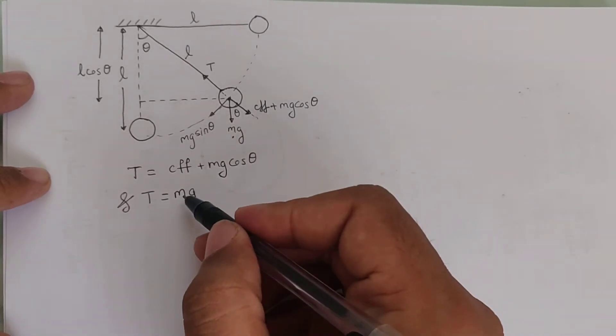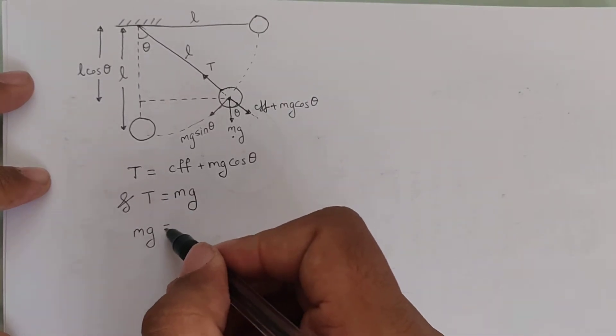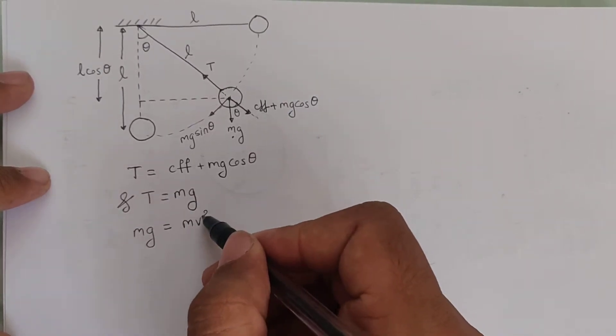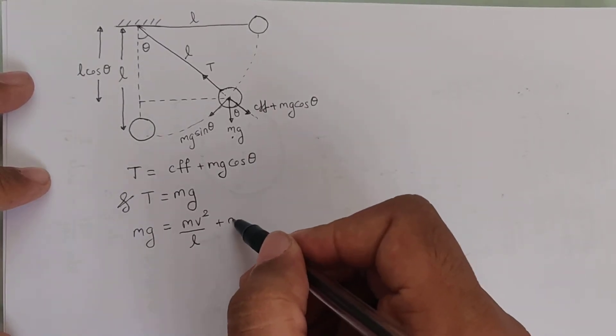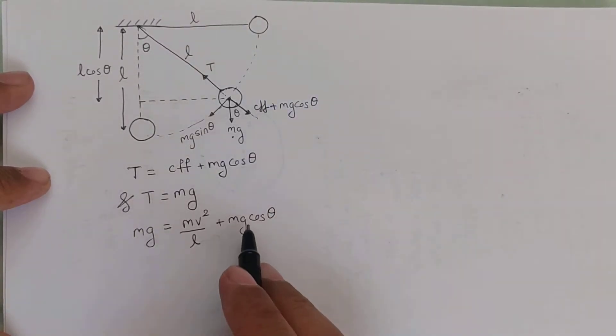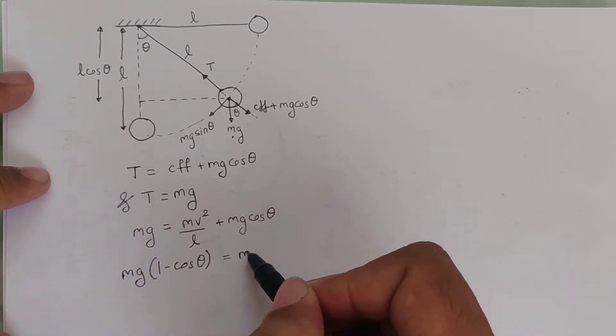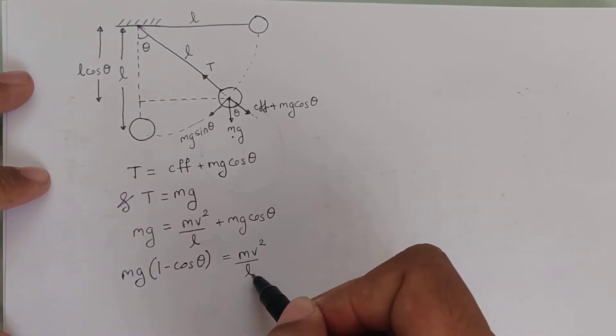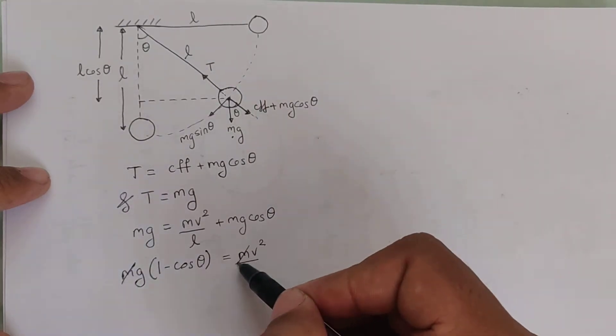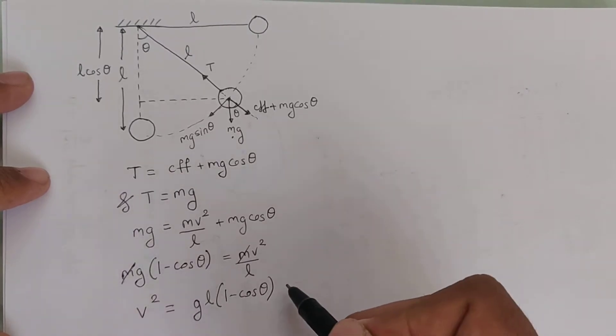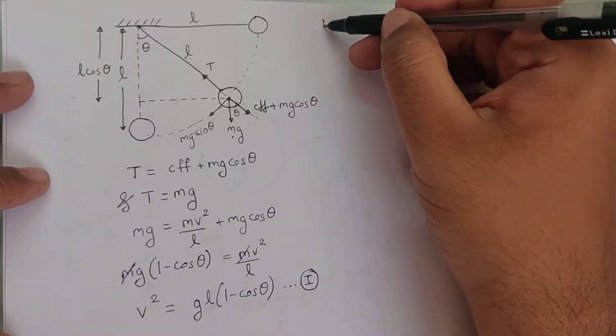If I substitute this I get Mg equals centrifugal force which is Mv² by L plus Mg cos theta. If I take Mg cos theta on this side, I can take Mg common in the bracket. I will have 1 minus cos theta which is Mv² by L. I can cancel M and I get V² as gL bracket 1 minus cos theta. I consider this as equation number 1.